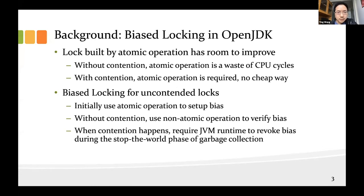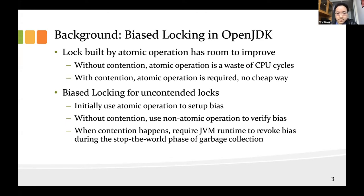As we know, locks in Java are usually handled by atomic operations from underlying hardware platforms. If we think about one case where we know the contention is very rare, then those atomic operations introduced in each lock operation are somewhat a waste of CPU resource, because we know the contention is rare. This is the case that bias locking was introduced in HotSpot version 1.6 to improve this uncontended scenario.